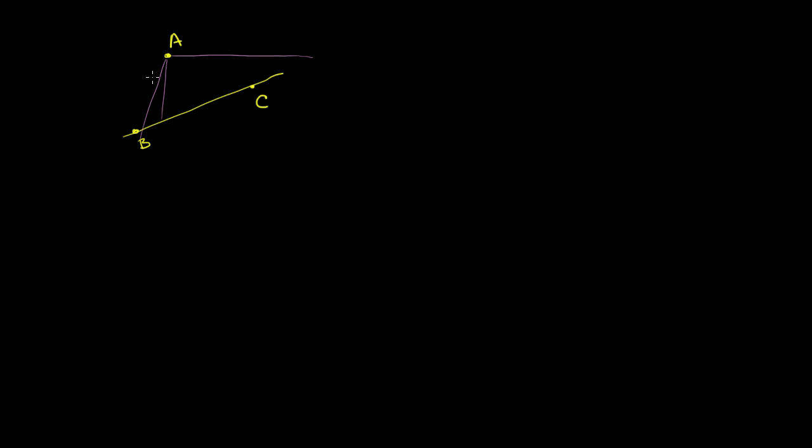And that shortest distance is if you were to drop a perpendicular from that point to the line. So this right over here is what we call the distance between the point and the line, and this is perpendicular.